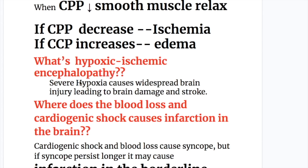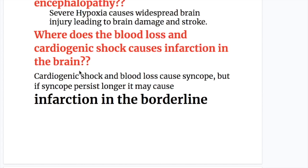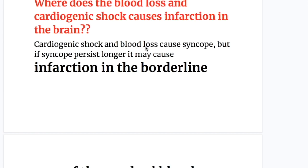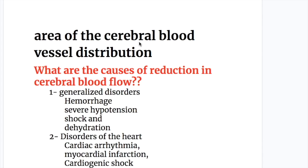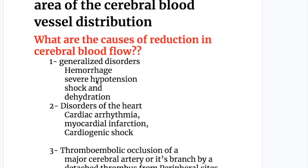Hypoxic ischemic encephalopathy: severe hypoxia causes widespread brain injury leading to brain damage and stroke. Cardiogenic shock and blood loss cause syncope, but if syncope persists longer, it may cause infarction in the borderline area of the cerebral blood vessel distribution.